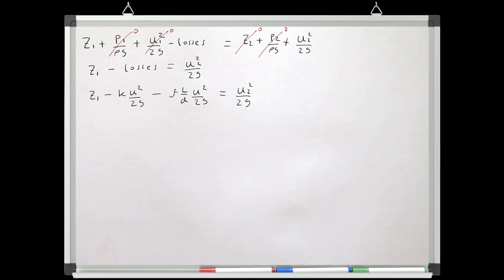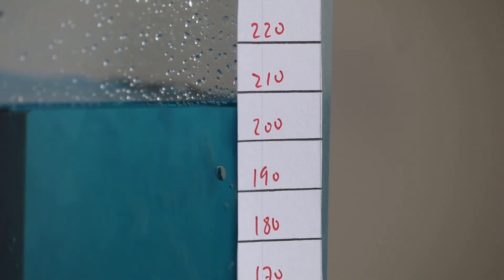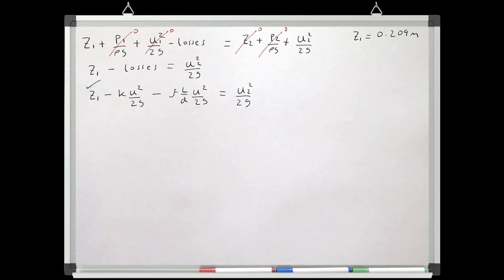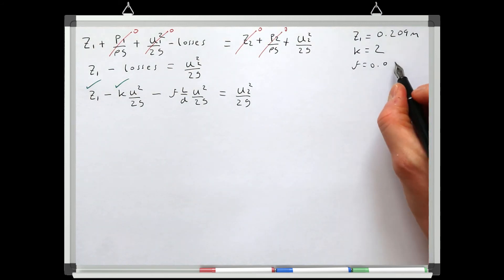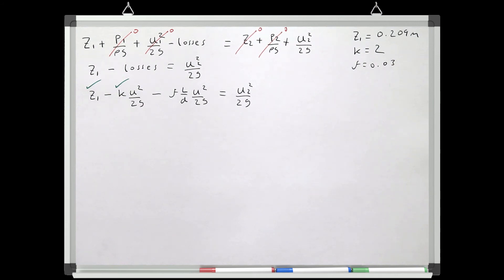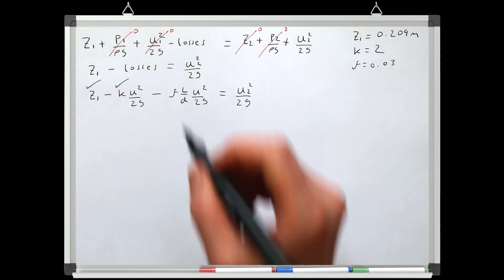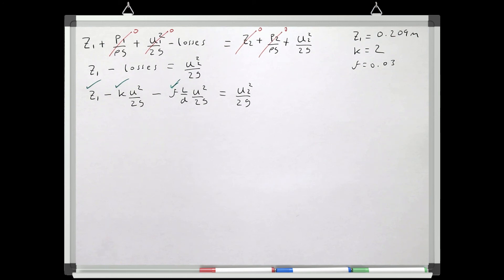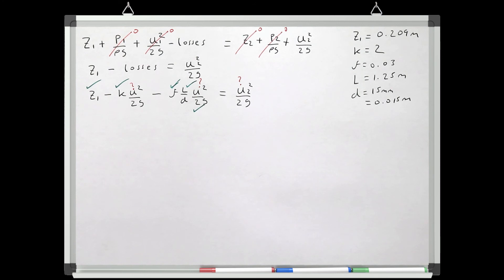Let's solve for velocity at the pipe's outlet. Z1 is 0.209 meters read from the tank gauge. The local loss coefficient k for the tank connector is 2. A reasonable estimate of friction factor f is 0.03, obtained from a Moody diagram. Pipe length L is 1.25 meters, and diameter d is 15 millimeters or 0.015 meters. We have all variables apart from velocity, but there are three velocity head terms, so we need to rework the equation before solving.